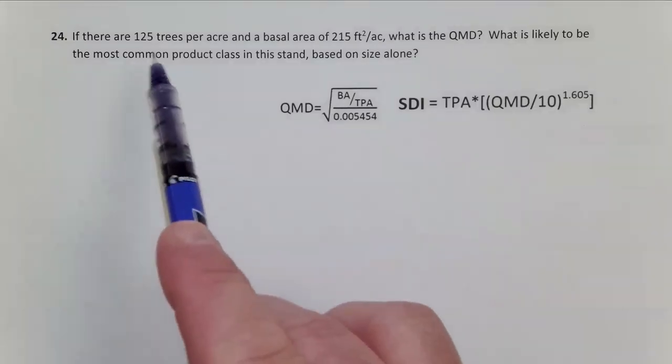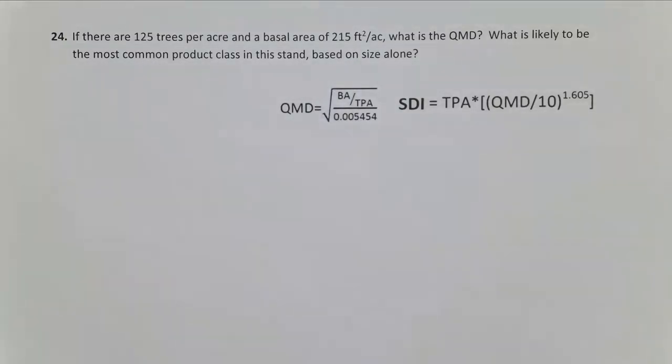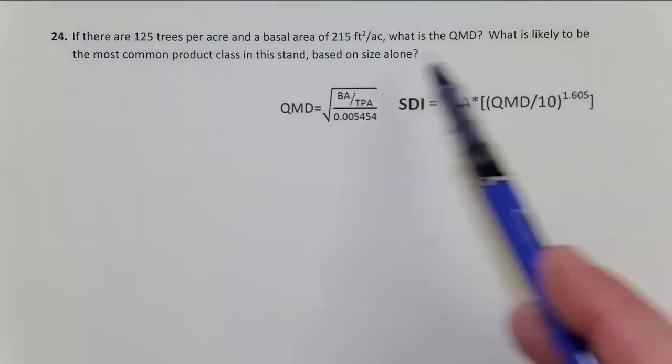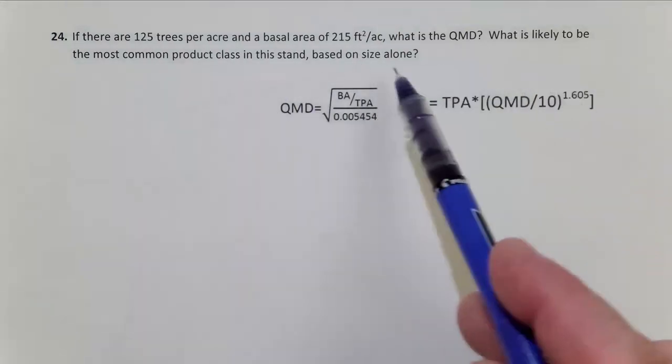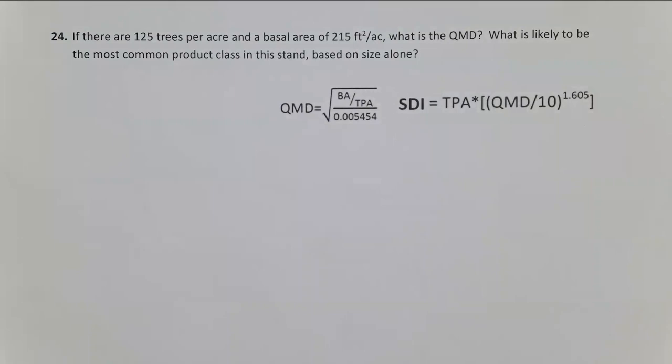In problem 24, we're given the number of trees per acre and the basal area of the stand, and we want to know the QMD. Then we want to interpret these data and look at what the most common product class on this stand is, based on just the average tree size.